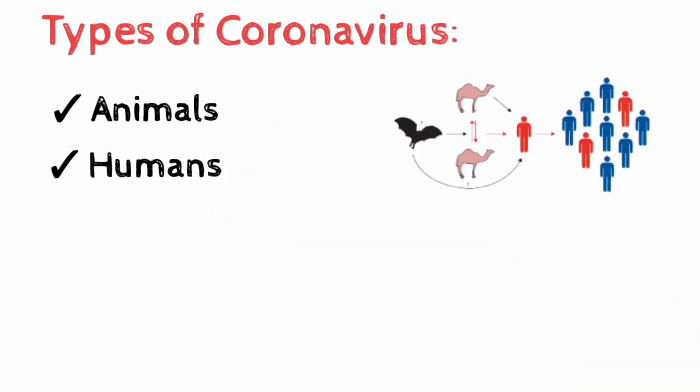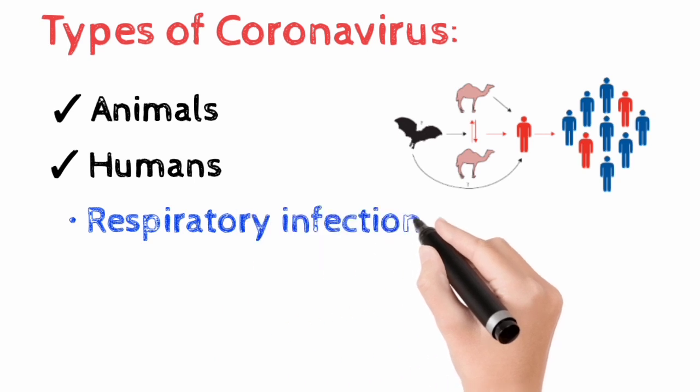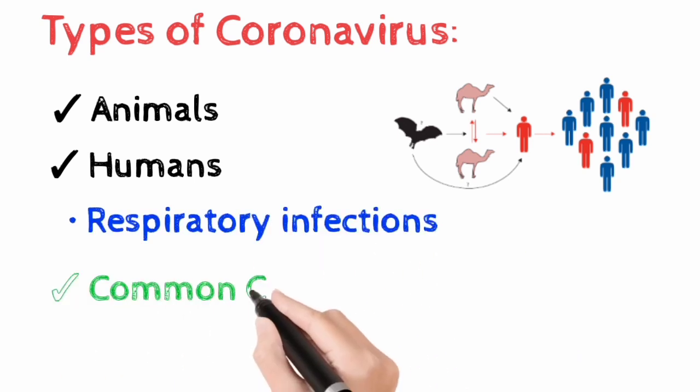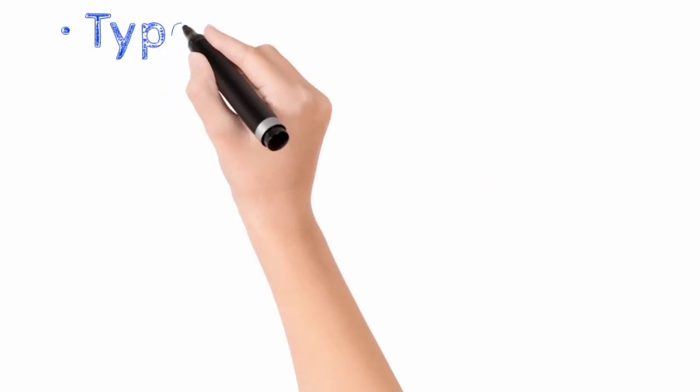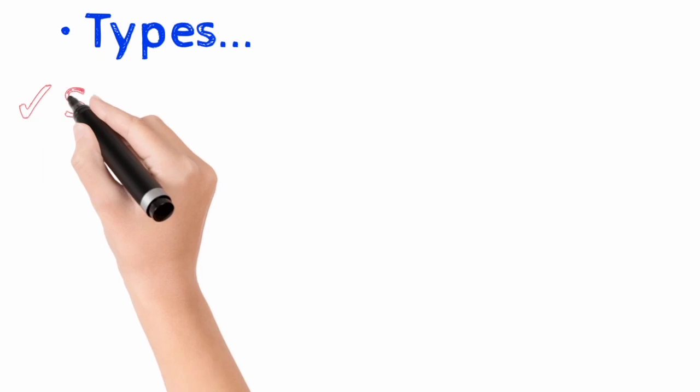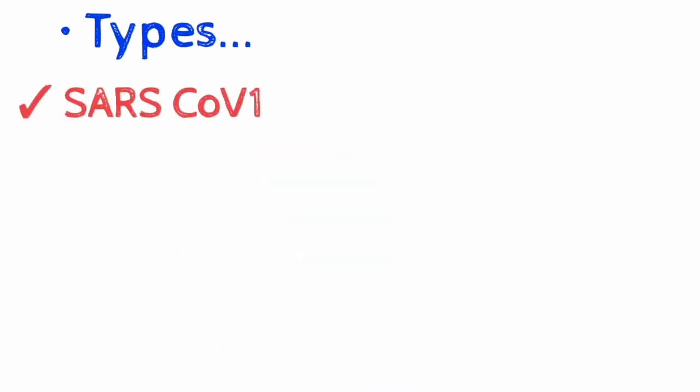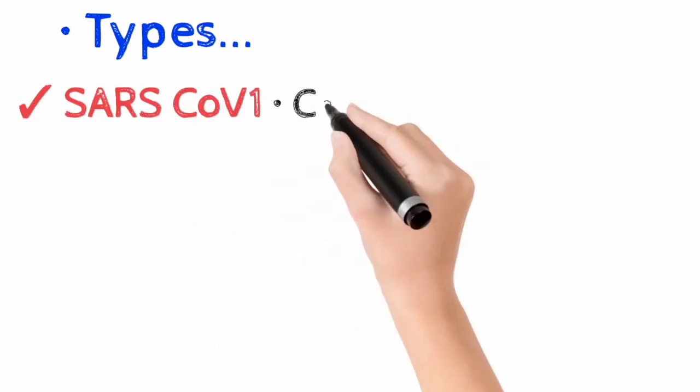In humans, coronaviruses can cause respiratory infections ranging from the common cold to most severe diseases. These include severe acute respiratory syndrome coronavirus or SARS-CoV that was first identified in China in 2003.